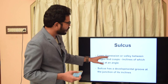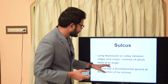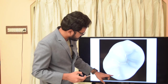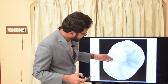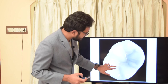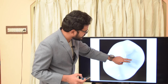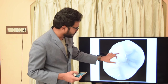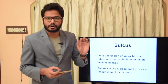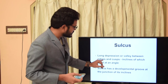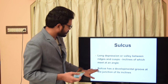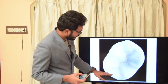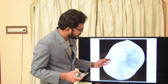A sulcus is a long depression or valley between ridges and cusps, the inclines of which meet at a particular angle. Sulci usually contain developmental grooves. The sulcus has a developmental groove at the junction of its inclines — where a ridge and a cusp meet, we have grooves at that junction, and this long depression is considered a sulcus.